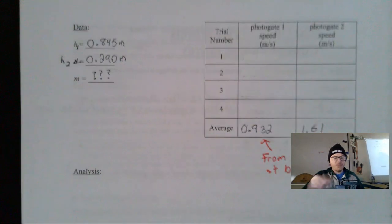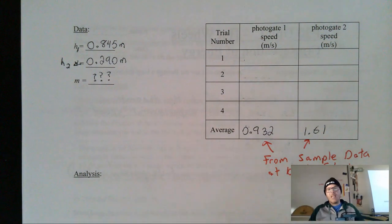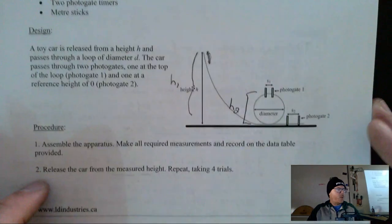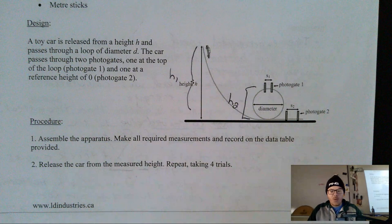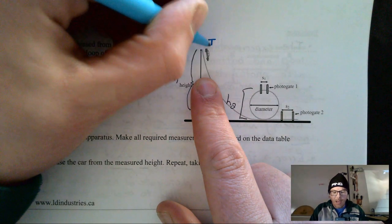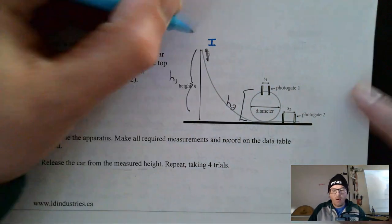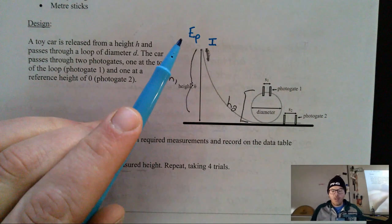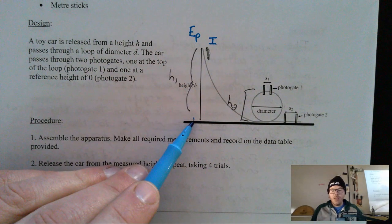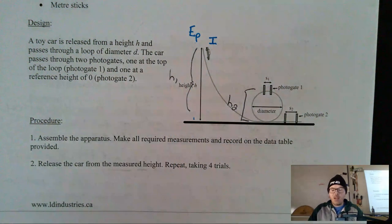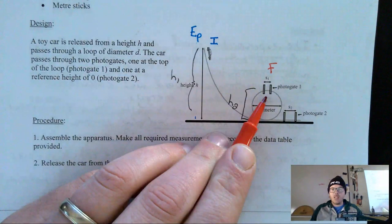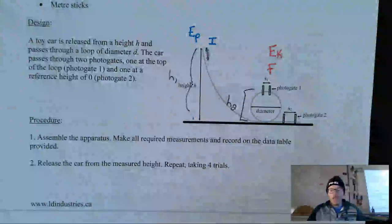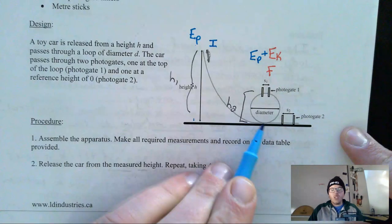The first thing we want to do is draw and label a diagram showing the system. Let's think about what types of energy we have at each position. At the initial position, where I start the car, it only has gravitational potential energy — it's at rest, so no kinetic energy, but it has height. At the final position at the top of the loop, there are two types of energy: kinetic energy because the car is moving, and gravitational potential energy because the car still has height — that's height two.